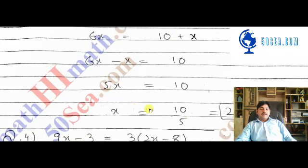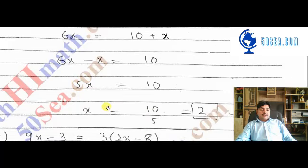So we have 5x equals 10. Therefore x is equal to 10 over 5, that is equal to 2 after cancellation. Finally we have x equals 2, so the value of the variable x is 2.